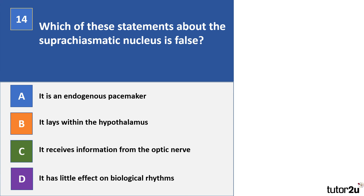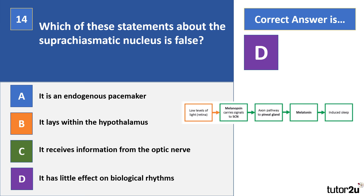Question fifteen part one. Which statement about the suprachiasmatic nucleus is false? A: it's an endogenous pacemaker; B: it lives within the hypothalamus; C: it receives information from the optic nerve; D: it has little effect on biological rhythms. The correct answer is D — it actually has a huge effect on biological rhythms, particularly the circadian rhythm. The diagram shows how the suprachiasmatic nucleus translates environmental information into the hormone melatonin, which is responsible for sleep.